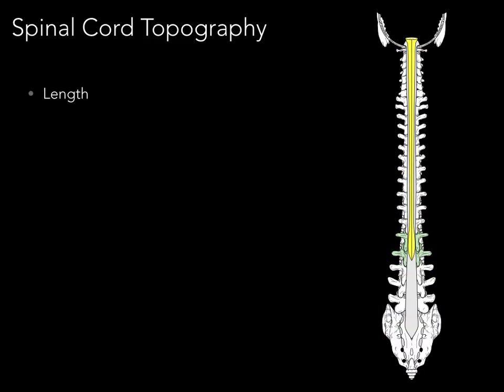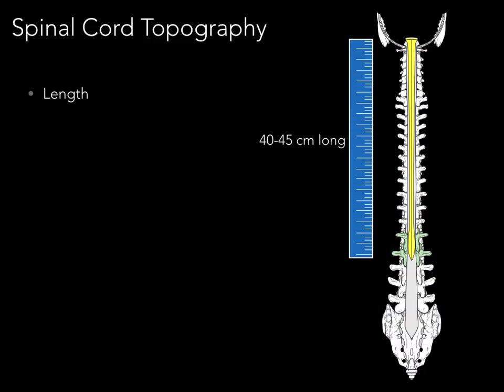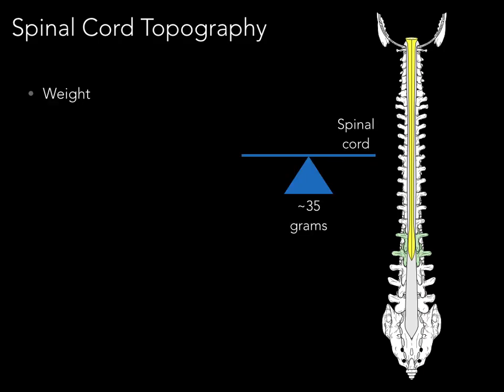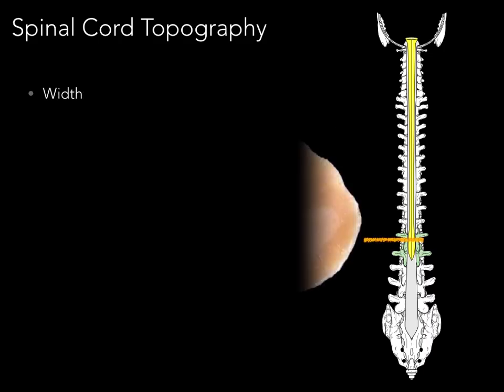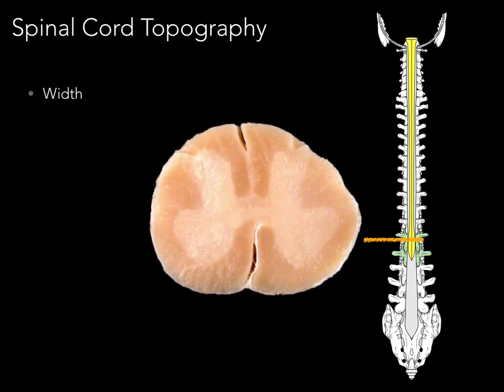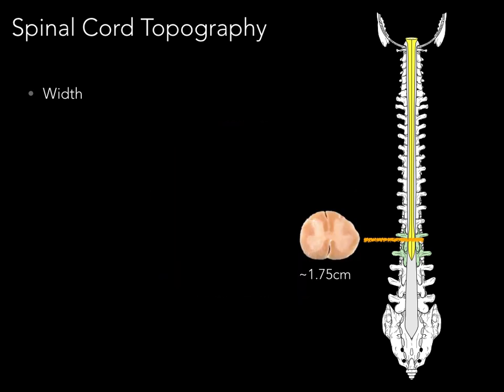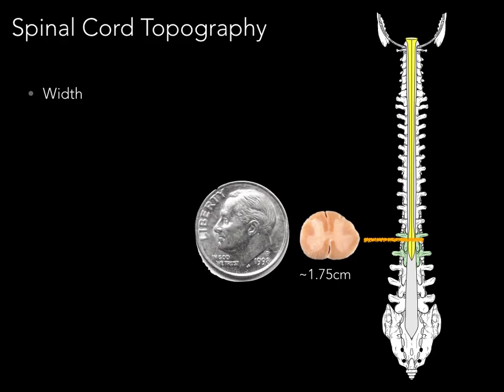How long is the spinal cord? It is approximately 40 to 45 centimeters long in an adult, which is less than half a meter in length. It weighs approximately 35 grams, which is about a small handful of nuts. Its width in cross-section is less than 2 centimeters wide, which is smaller than a dime in cross-section or narrower than the width of your pinky finger.